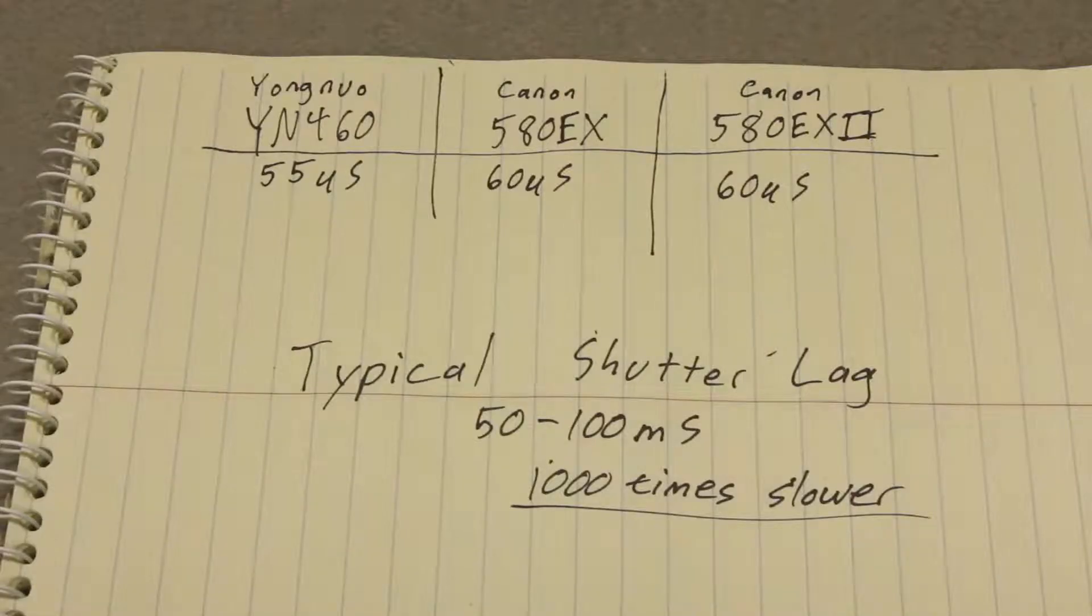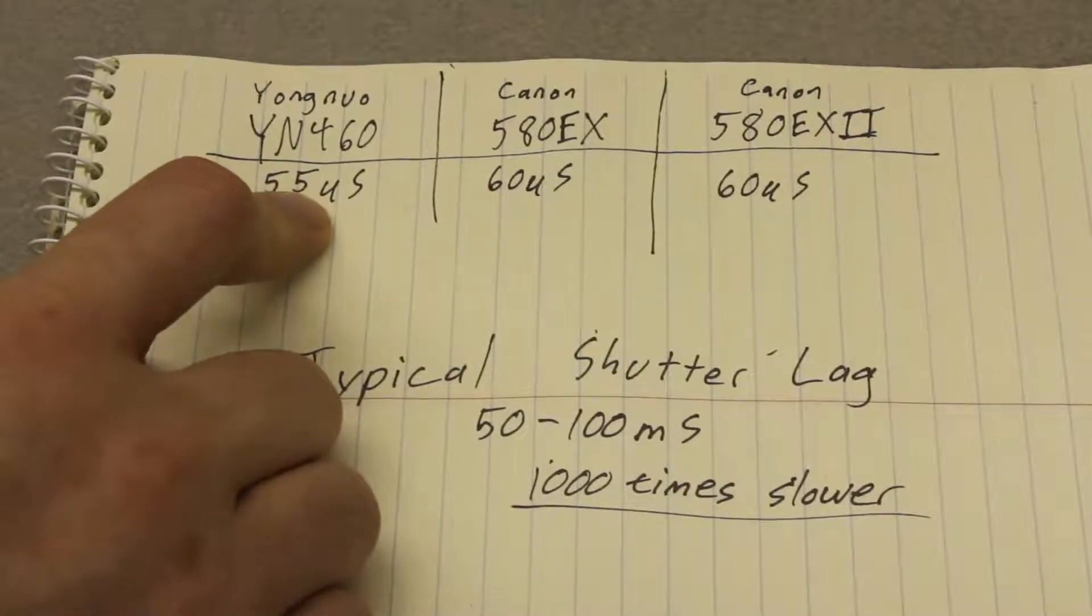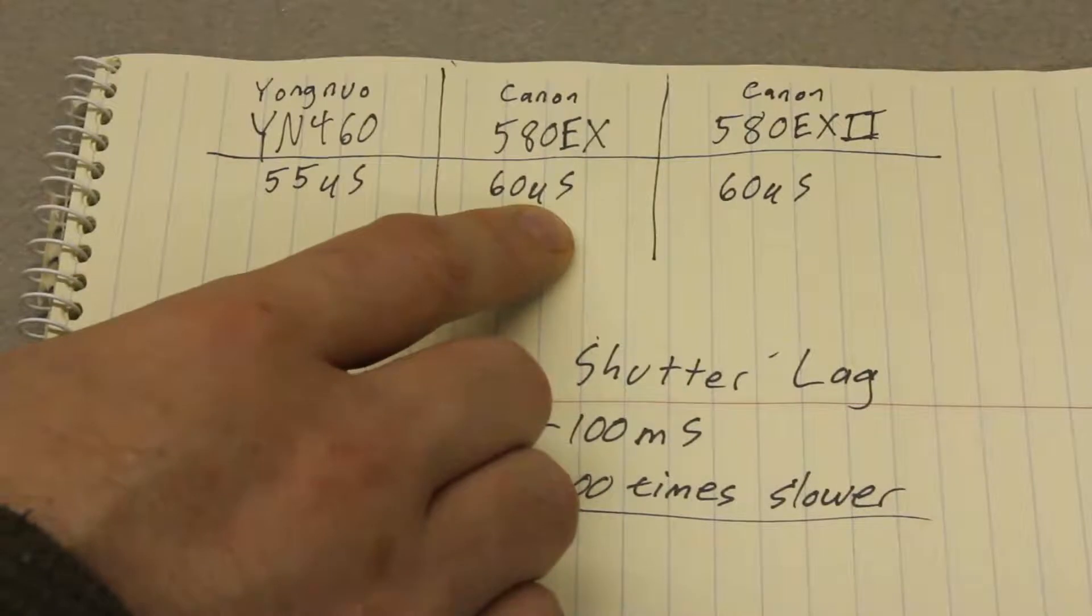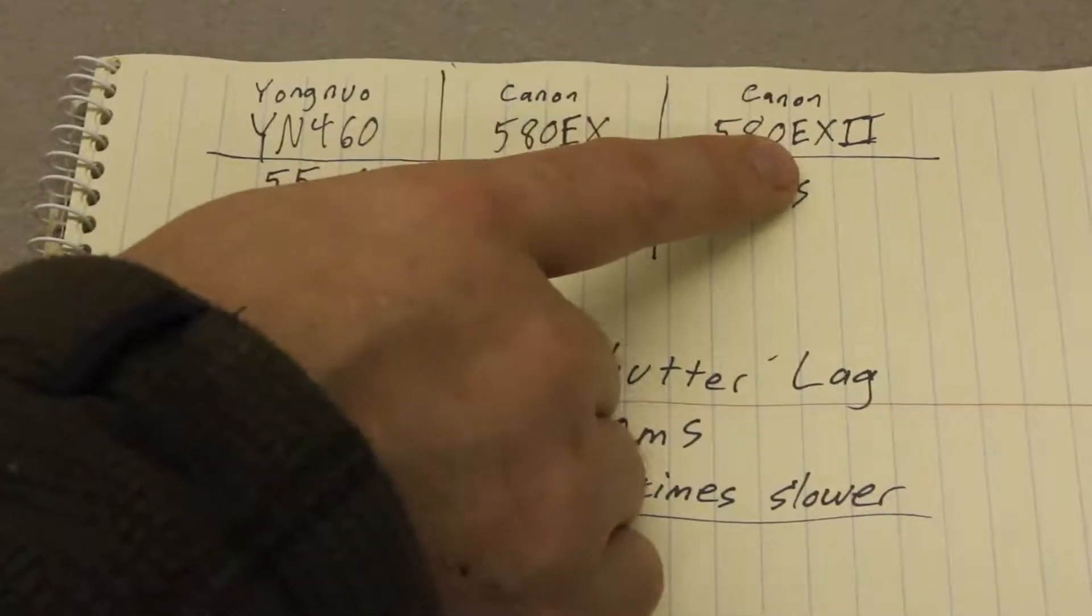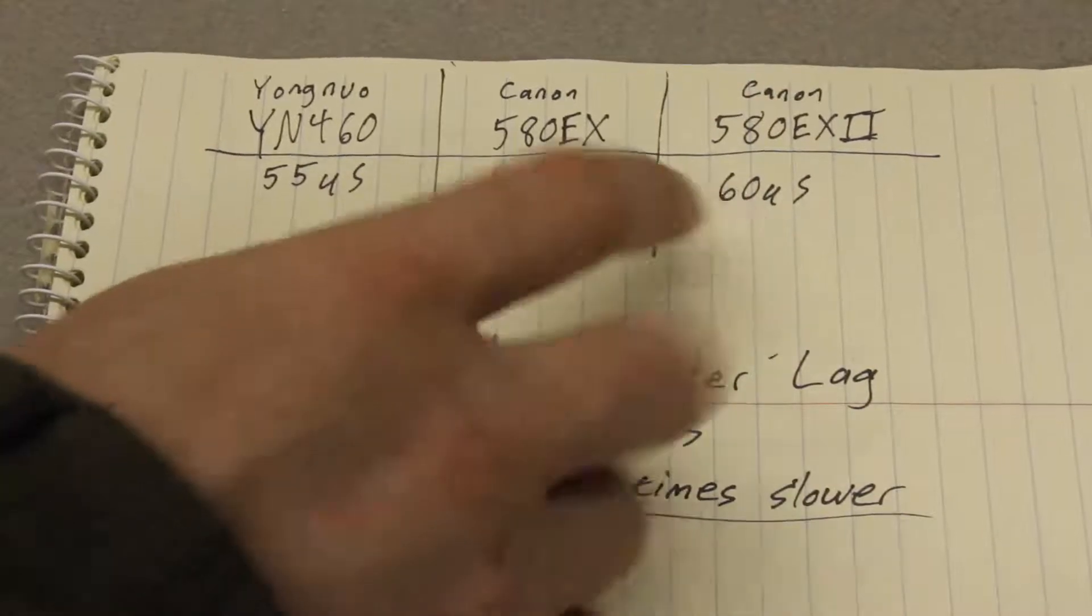So I did a bunch of testing with three different flashes and all three of the flashes had very consistent flash lags. The Yongnuo YN460 was 55 microseconds. The Canon 580EX was 60 microseconds and the Canon 580EX II was 60 microseconds.